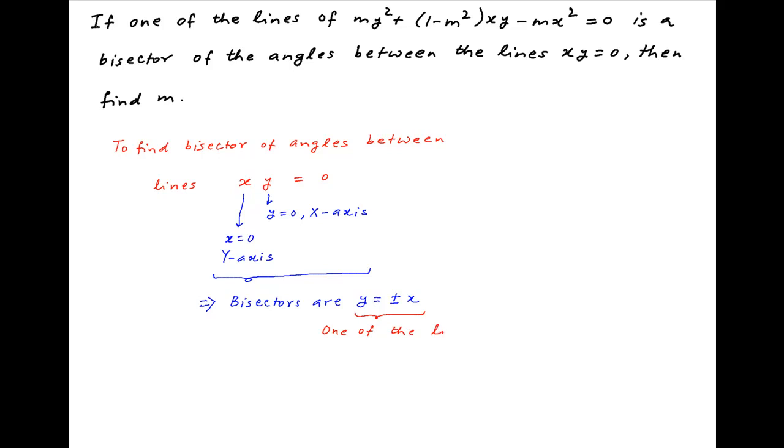Now we are given that these bisectors are one of the lines given by the equation my² + (1 - m²)xy - mx² = 0.